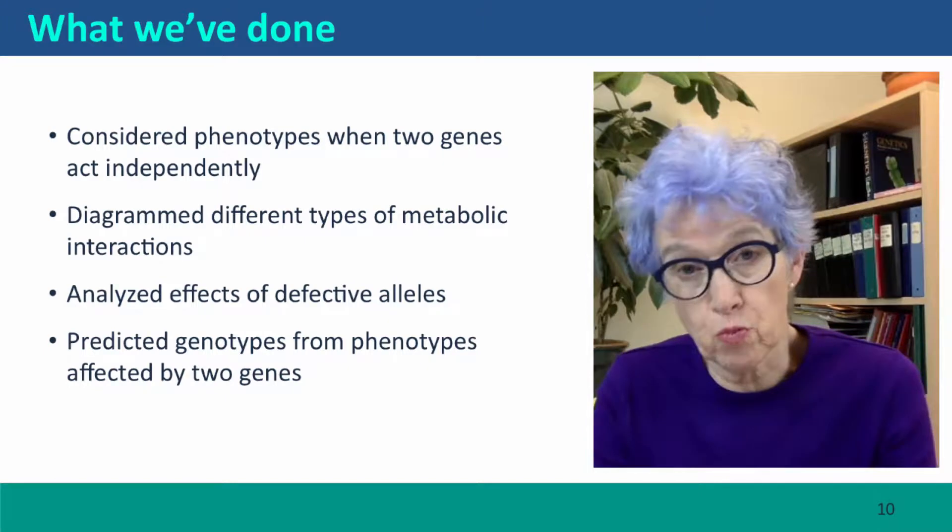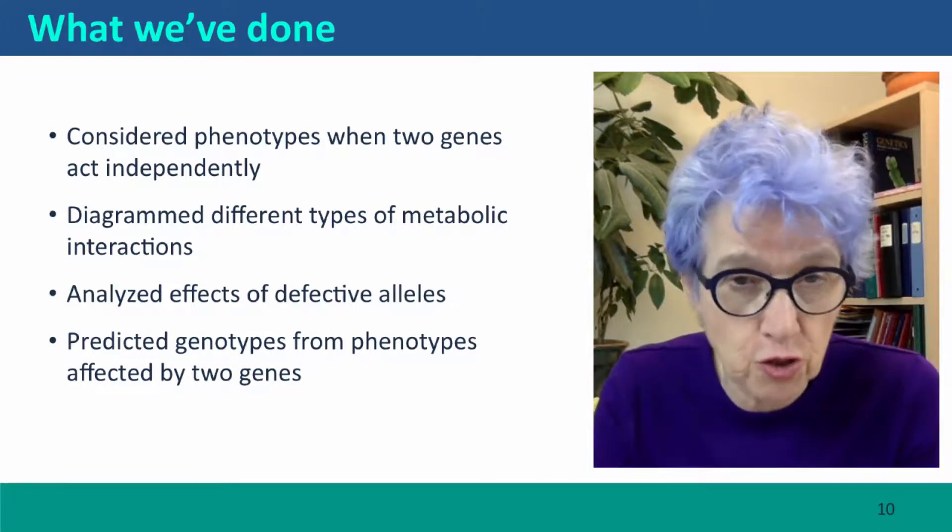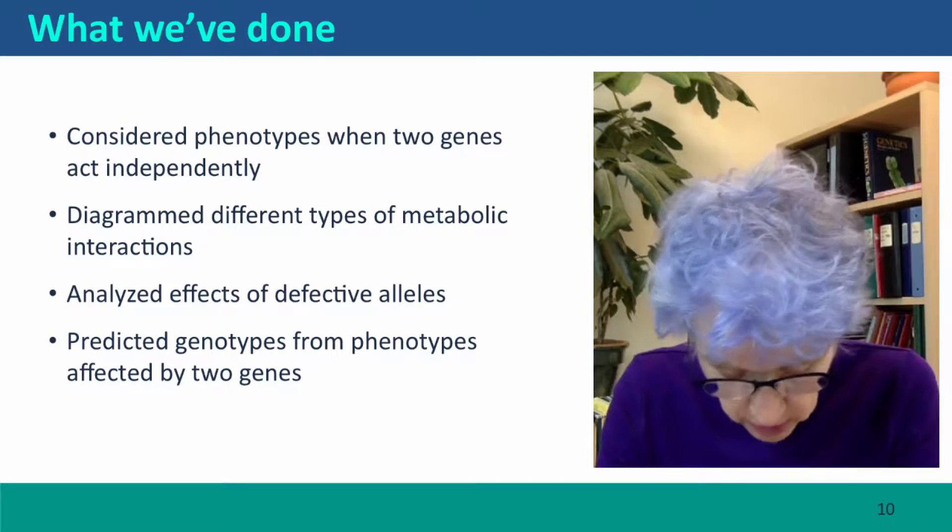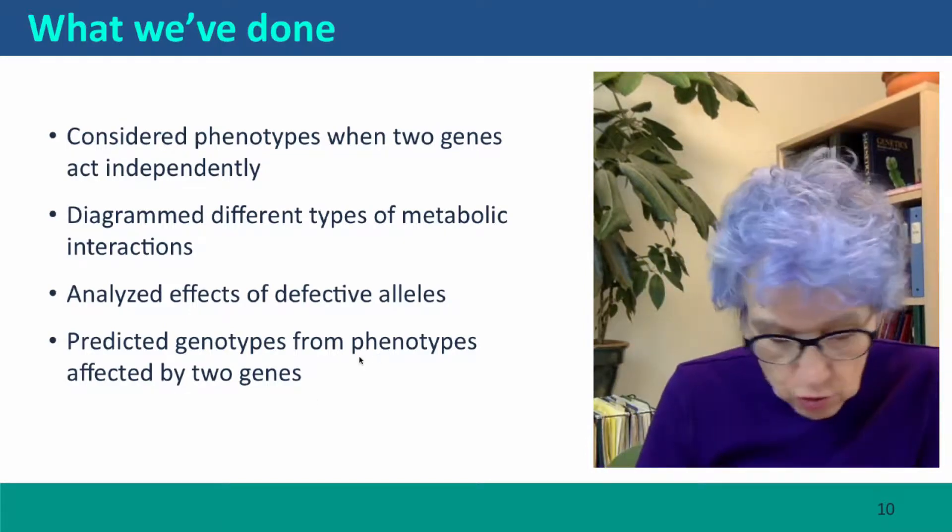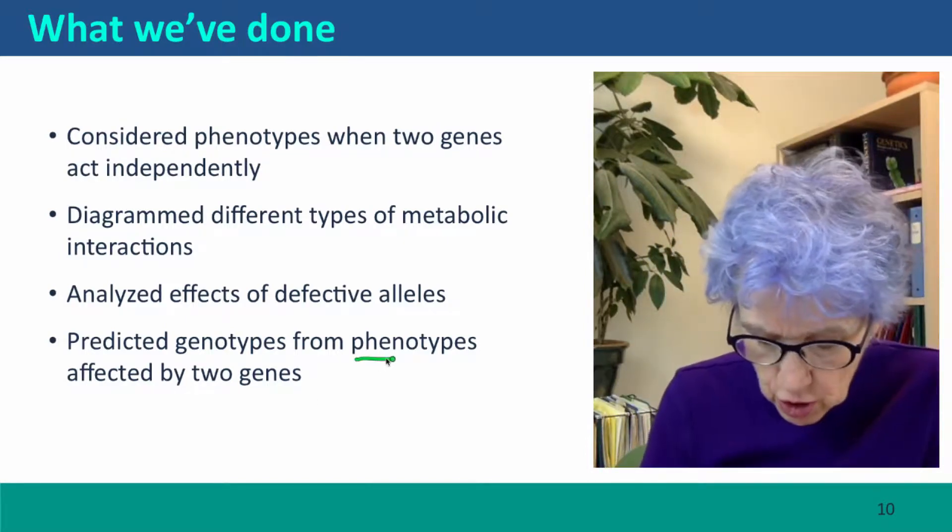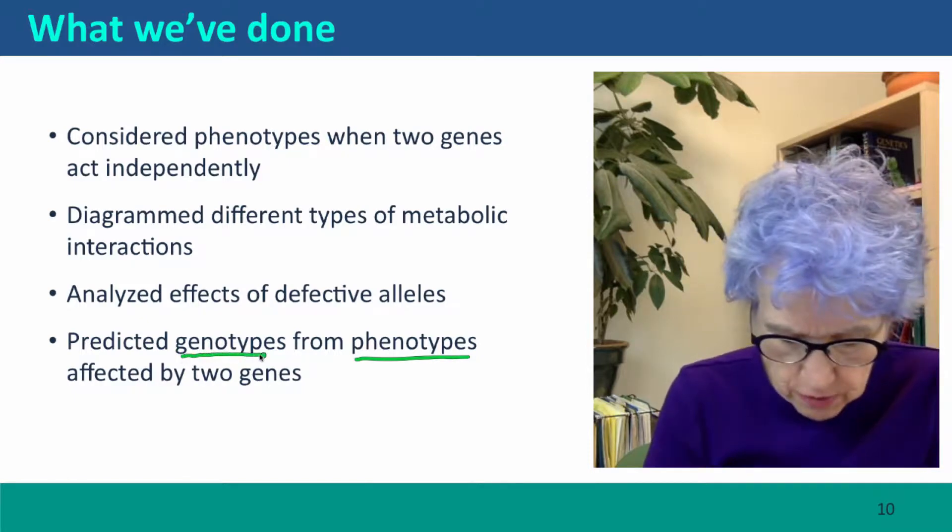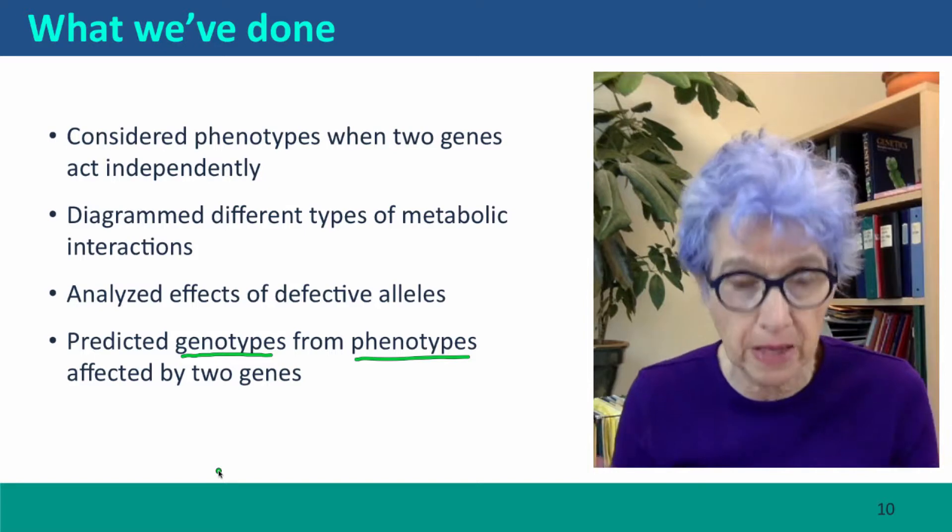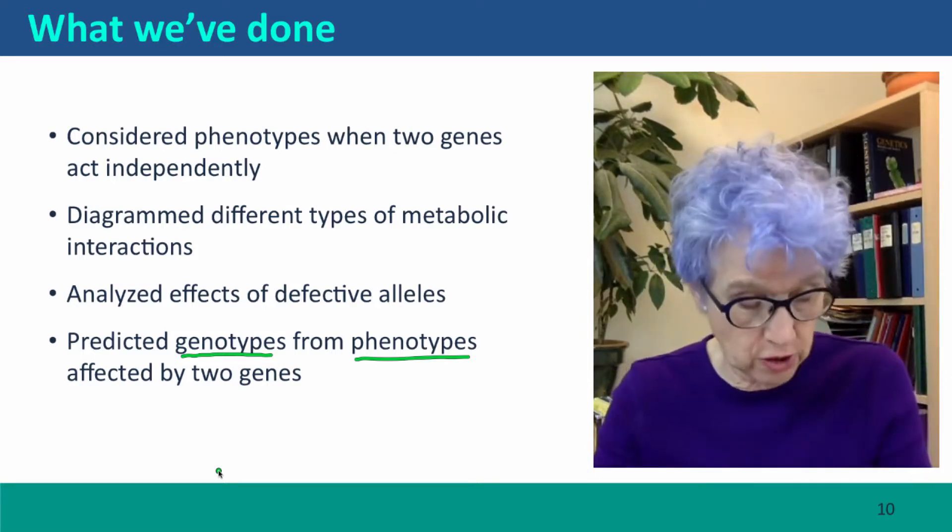We've diagrammed really only one type of metabolic interaction so far and analyzed the effects of defective alleles, and we've used phenotypes to predict genotypes. We could do this because we knew the underlying genetic basis of the process that caused the phenotype.